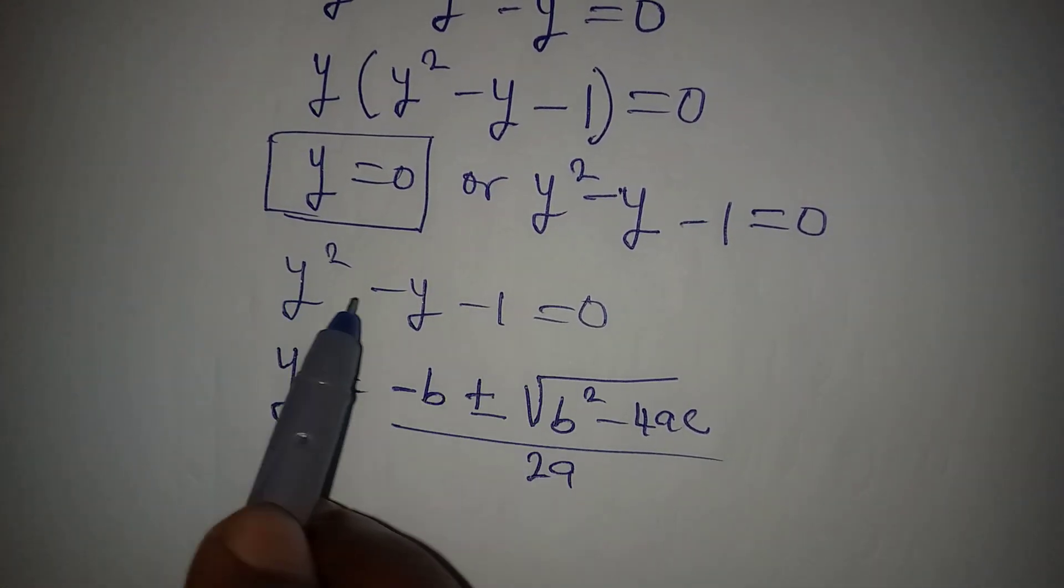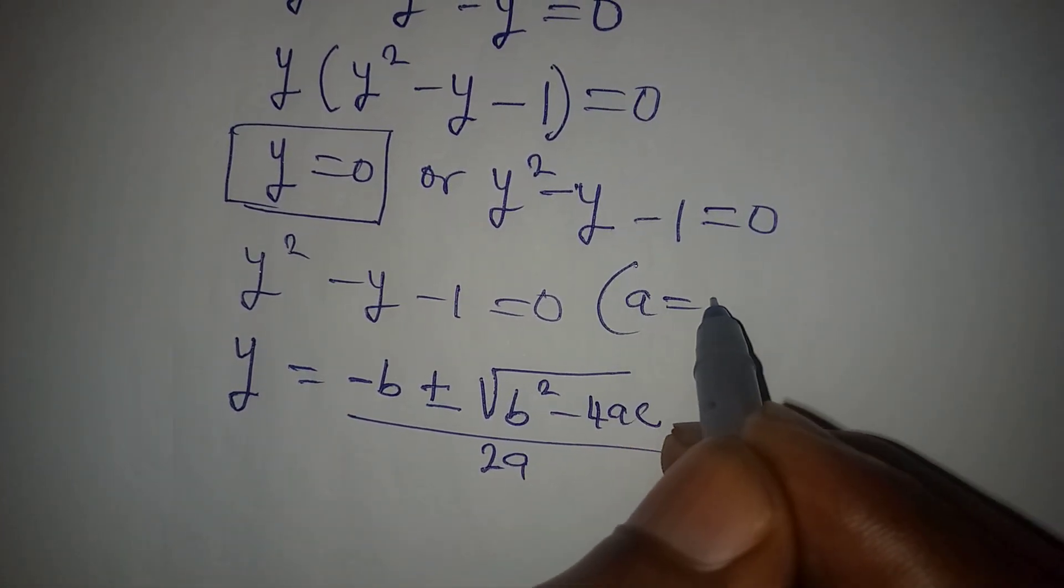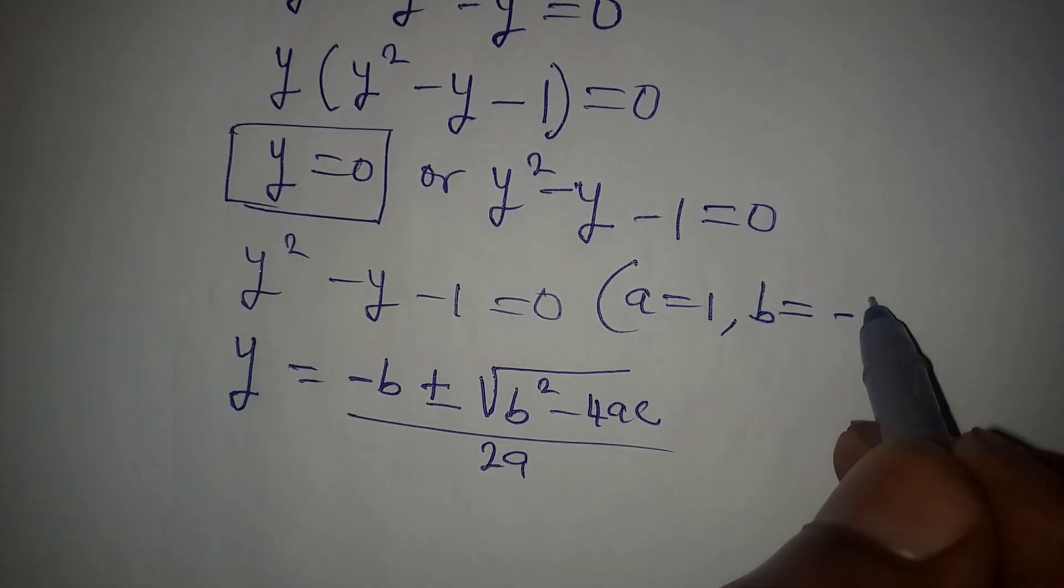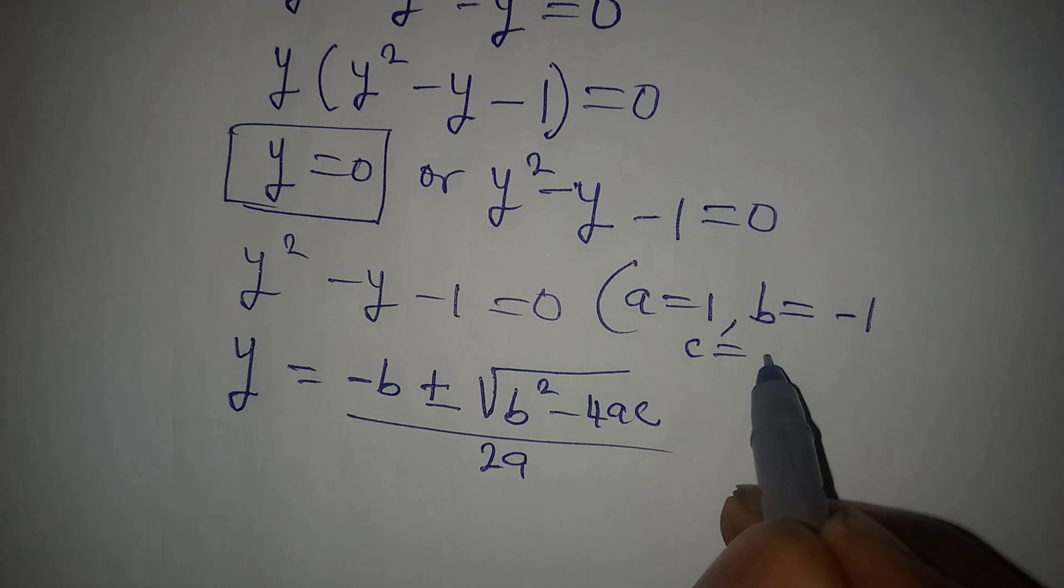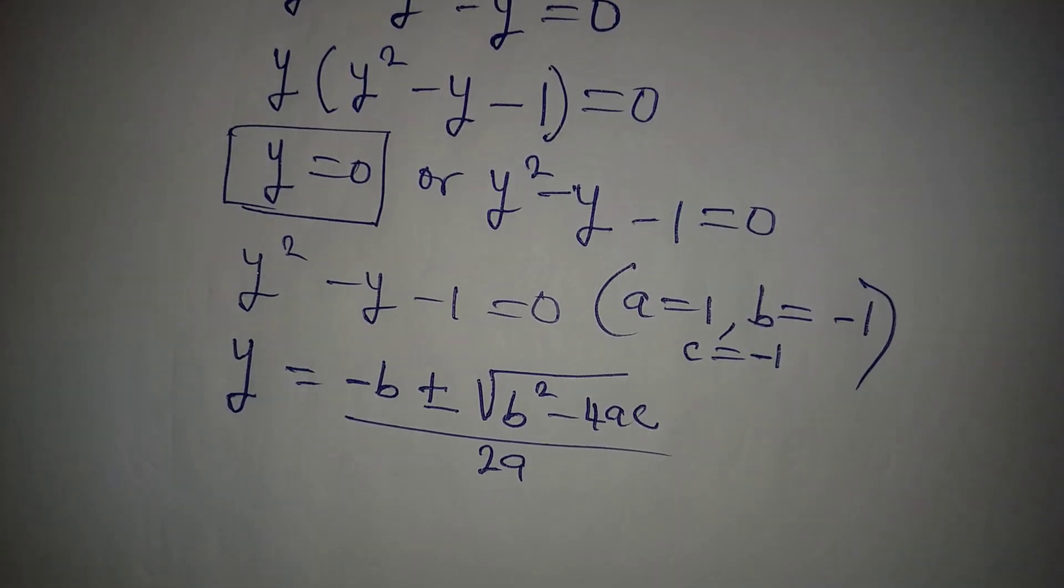Now according to this equation, our a is equal to 1, our b is equal to minus 1, and c is equal to minus 1 as well. So these are the values for a, b, c.